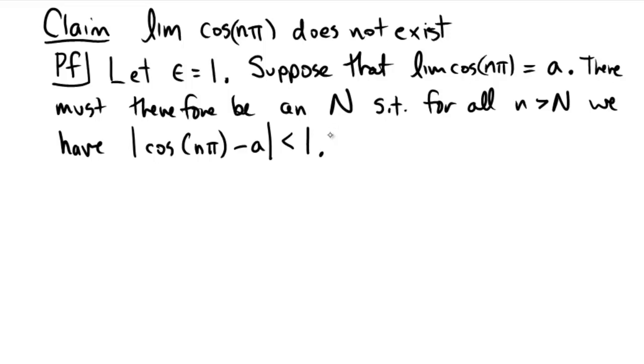So notice that for an odd n bigger than N, this means that we would have cosine of an odd number times pi, and that therefore would be a negative 1, so we'd have the absolute value of negative 1 minus a would be less than 1.